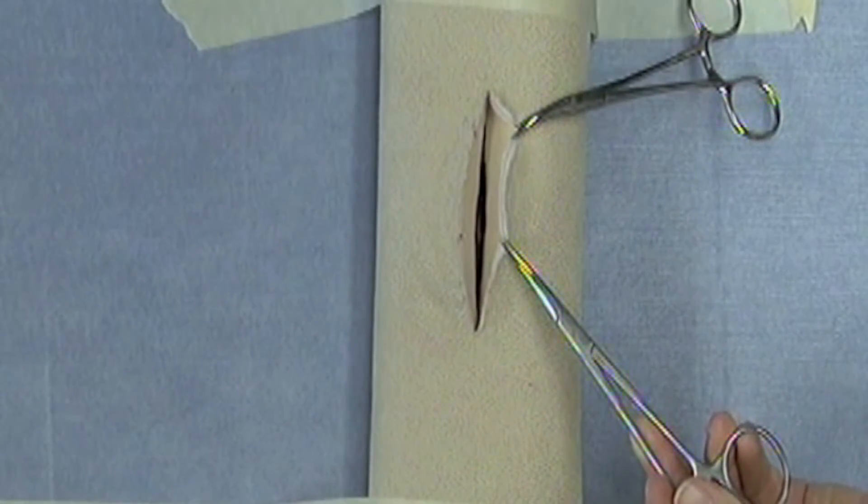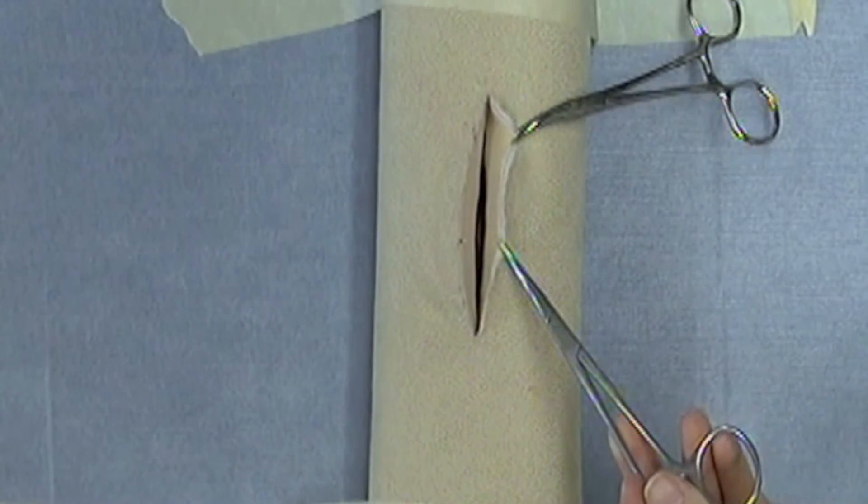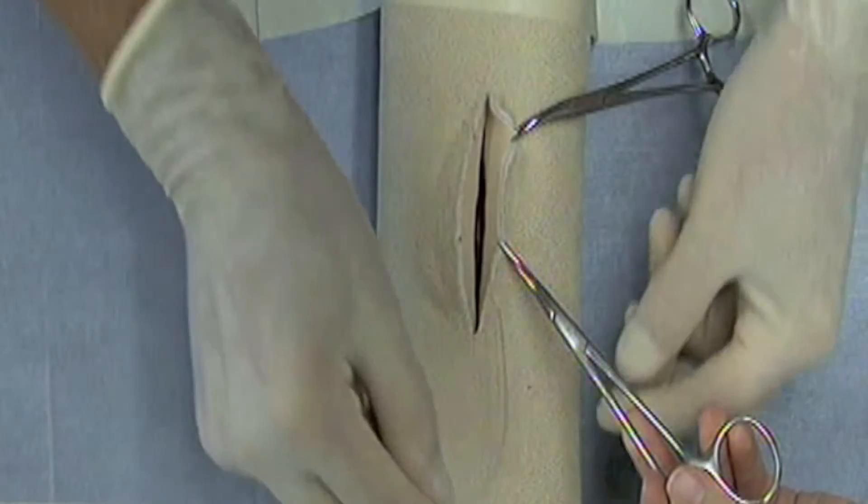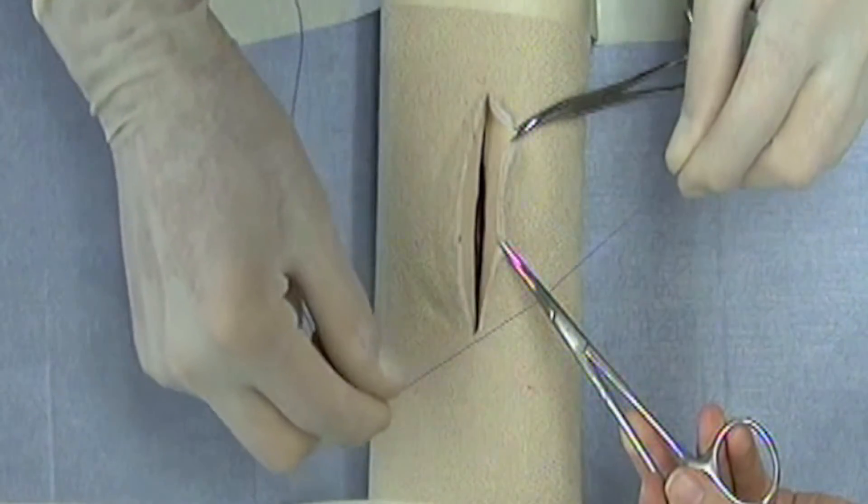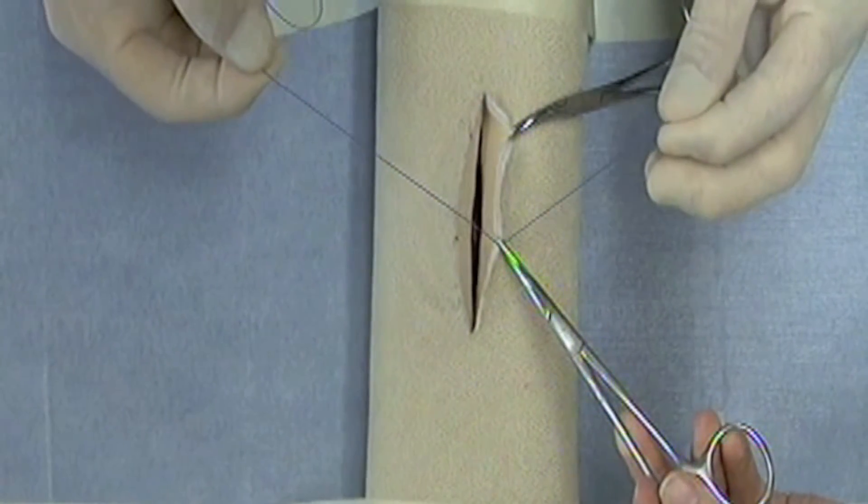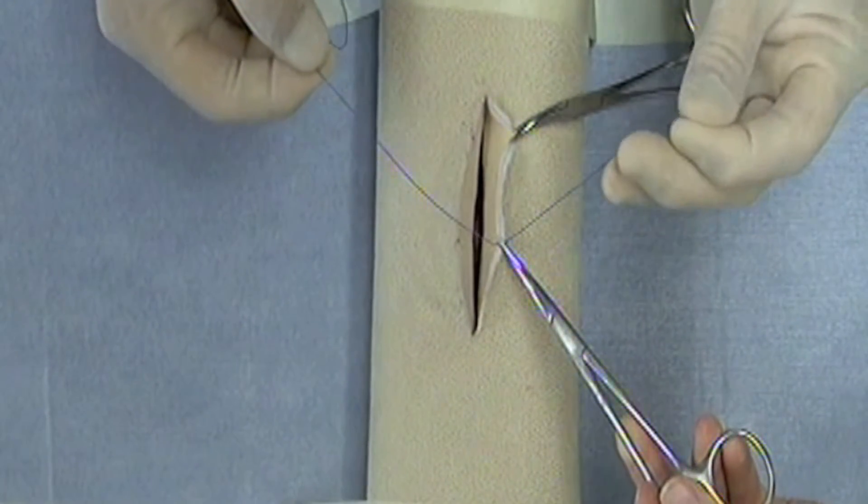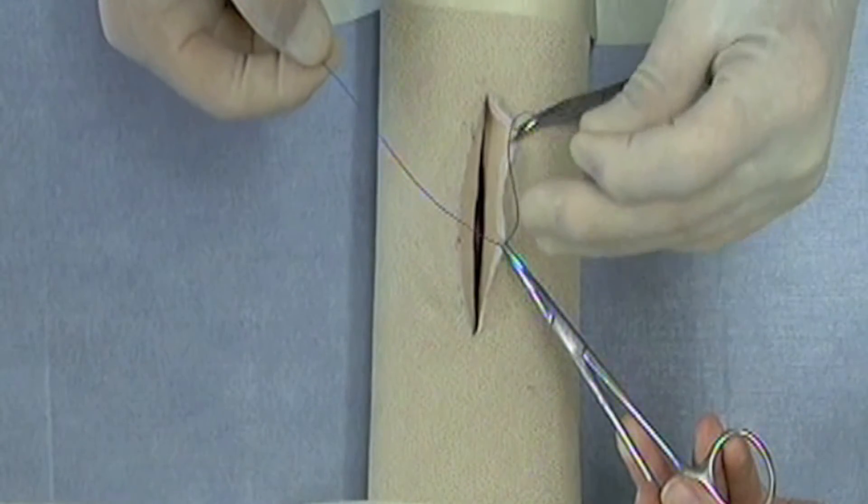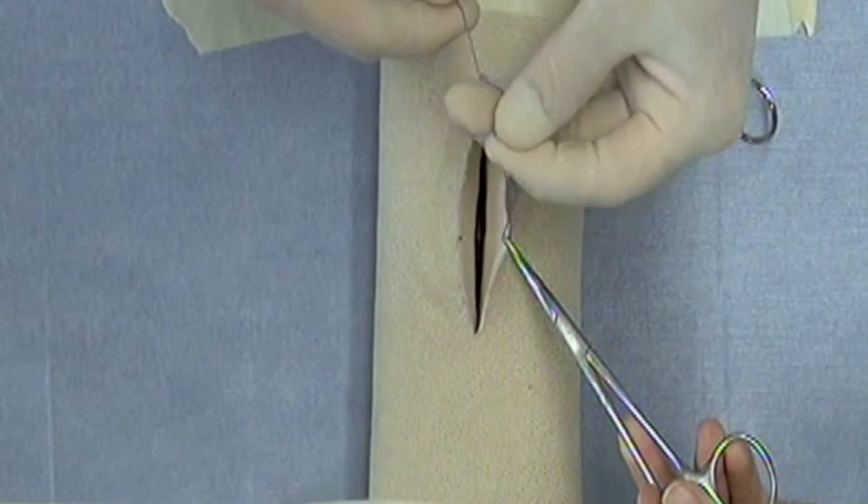Now for this one I will demonstrate a left-handed one-hand tie. Remember as with any one-hand tie, the short end of the suture is in the hand that's doing the tying and so you'll notice that I'm going to complete two throws.